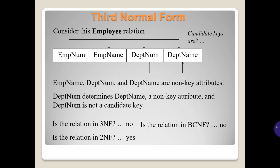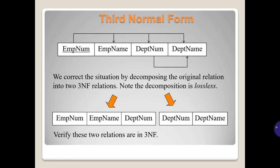Consider this employee relation — you can look at the slide for the candidate keys. The relation has attributes EmpNum, EmpName, DepNum, and DepName. We correct the situation by decomposing the original relation into two 3NF relations. Note the decomposition is lossless. Verify that these two relations are in 3NF.